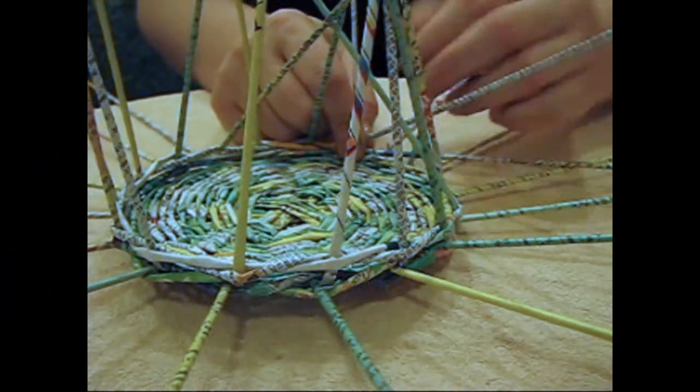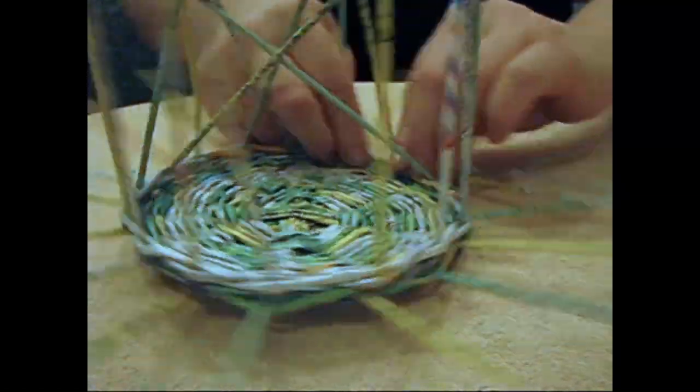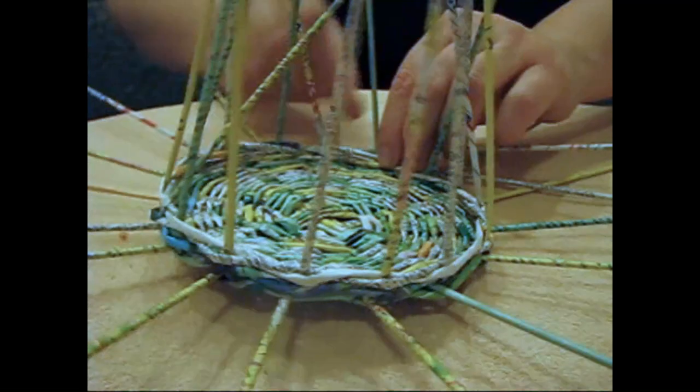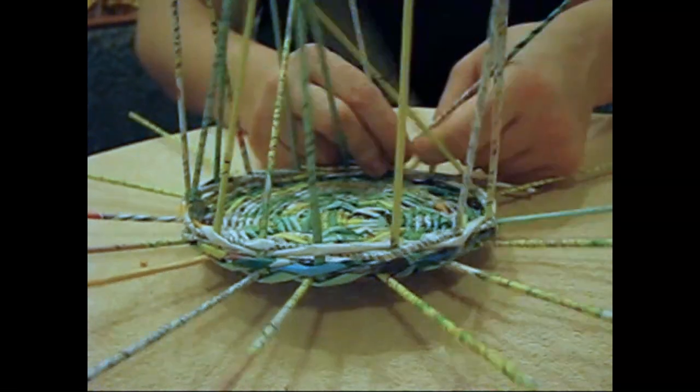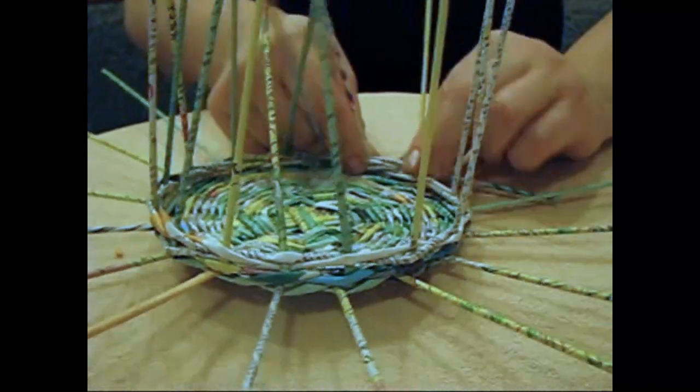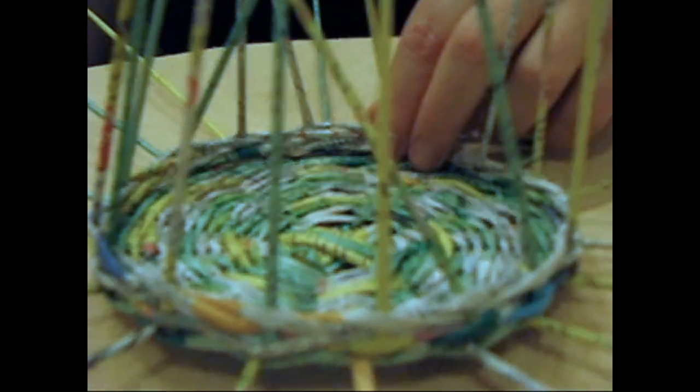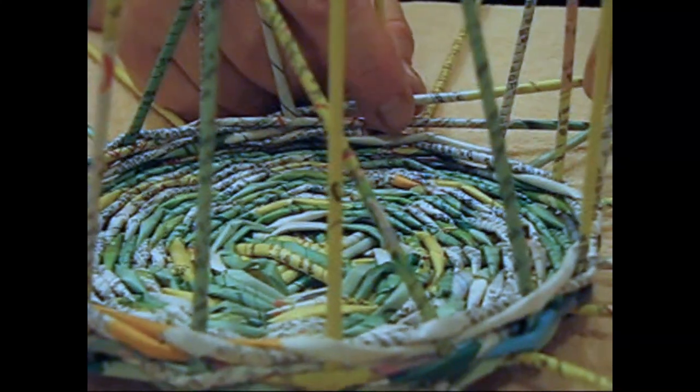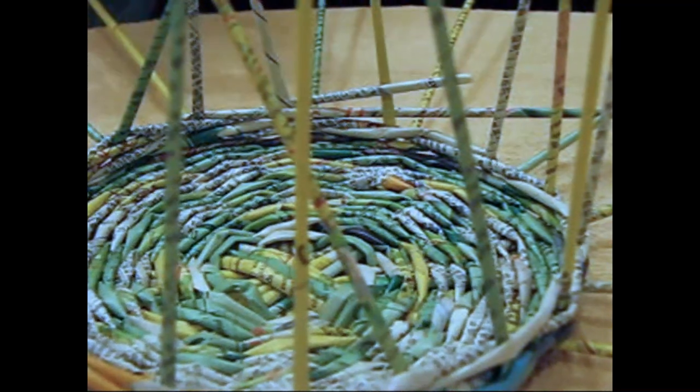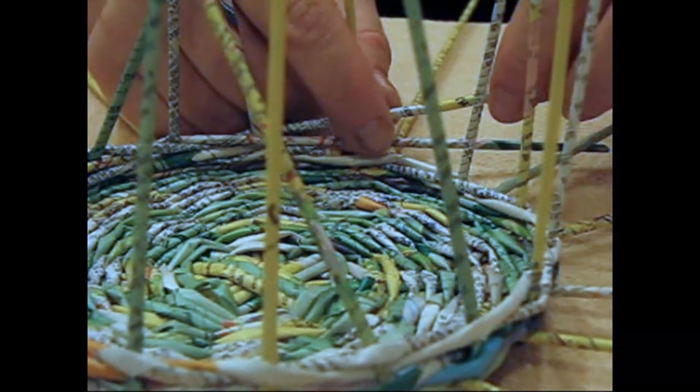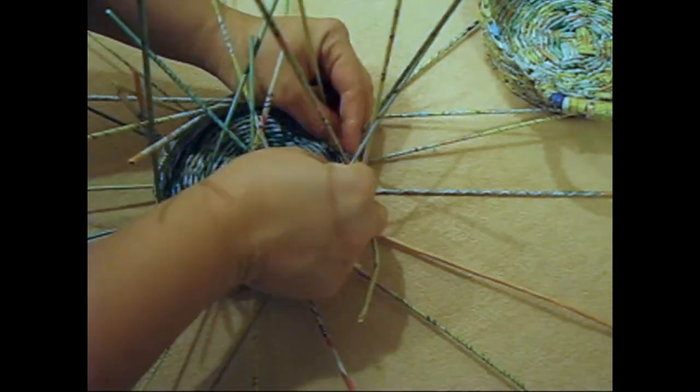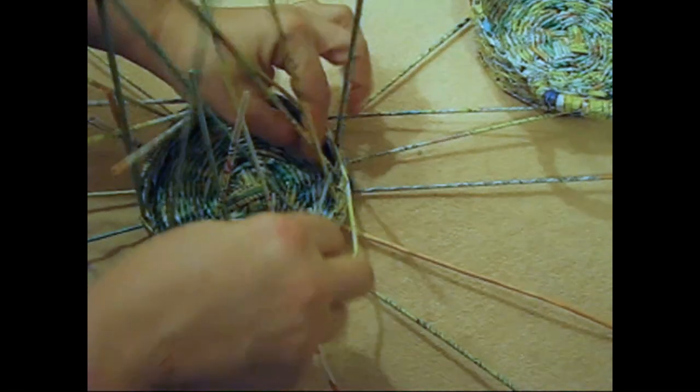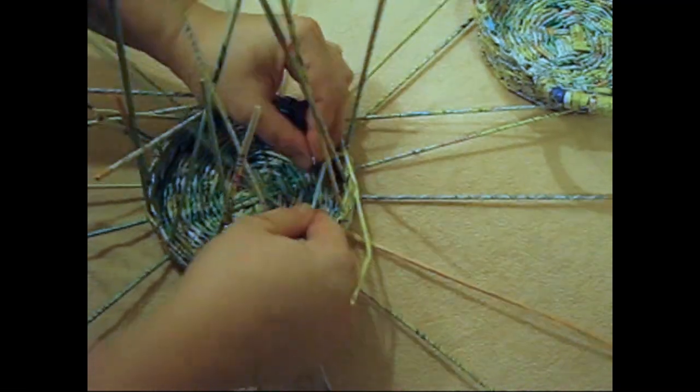And continue this way until we braid all the poles. We have to braid this way two, three, four rows. For convenience, I have let the tubes outside. It is more convenient to braid this way. So, we've made four rows.